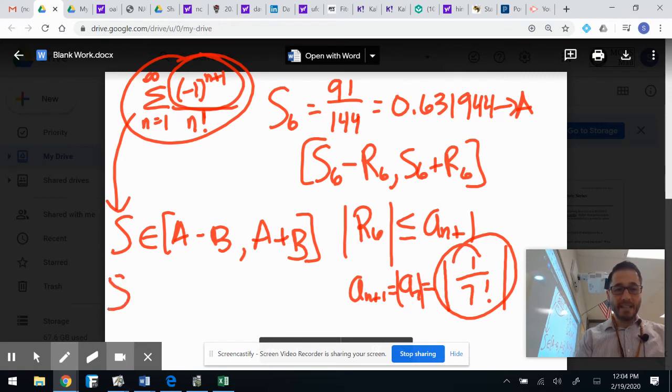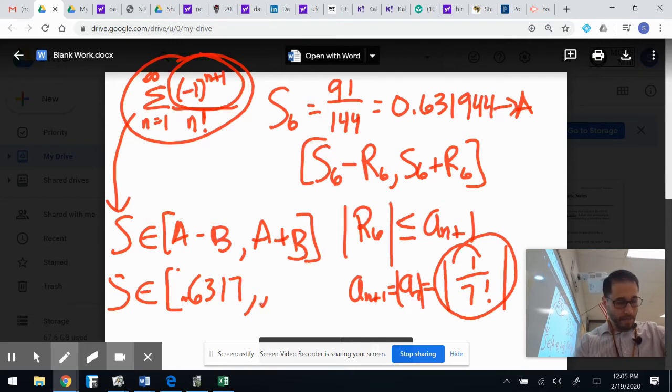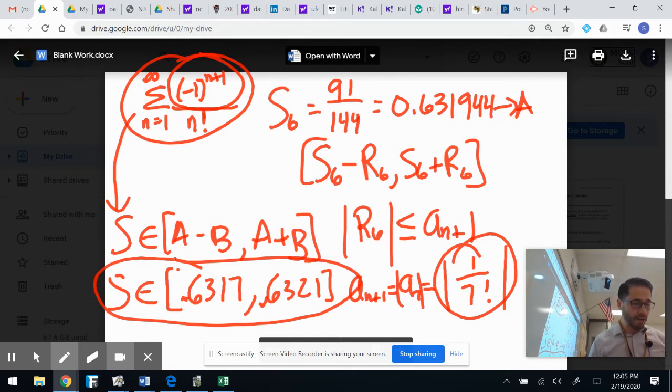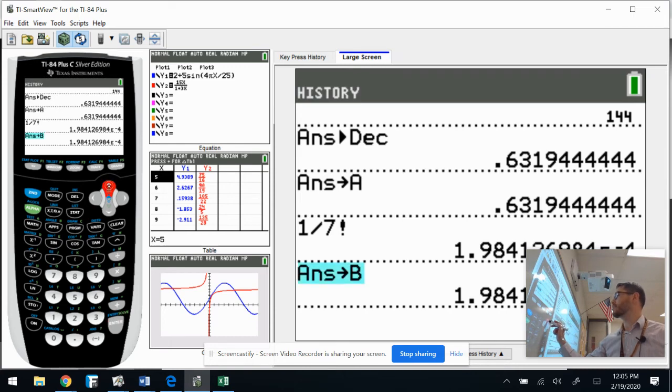So that means S, the actual sum of all of this stuff would be equal to, I already did this in my calculator. If you do alpha A minus B in your calculator, I got point six three one seven. If you do out A plus B in your calculator, you get point six three two one. And that's it. That's all this problem's asking about. Use your results to find an interval in which S may lie. S lies right there in that bad boy. And what's super cool is I can come back to my calculator. I'm going to hit enter to bring it back.